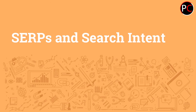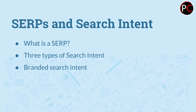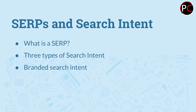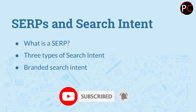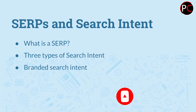In this section we're going to talk about SERPs and search intent. Here's the outline: we're going to ask what is a SERP — you'll see this term used commonly in blogs and discussions about SEO. Then we're going to look at SERPs and define the three types of search intent. After that, we'll briefly discuss branded search intent, which isn't one of the typical three types mentioned in SEO, but we'll call it out specifically and talk about the implications.